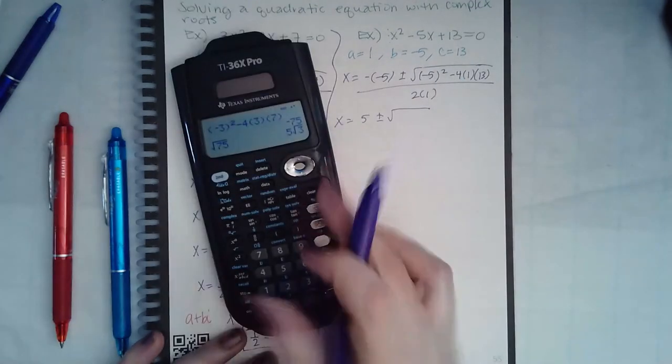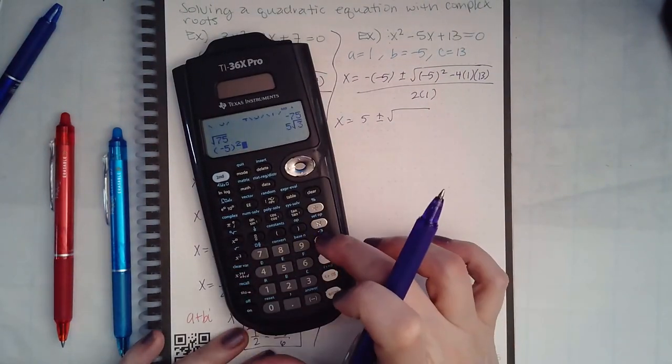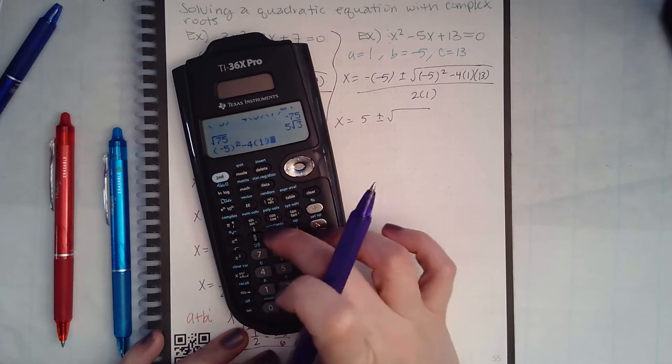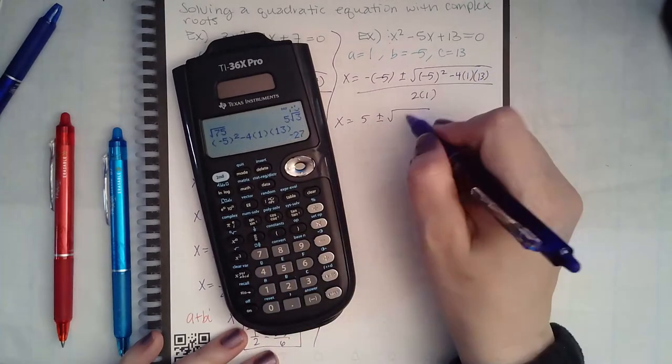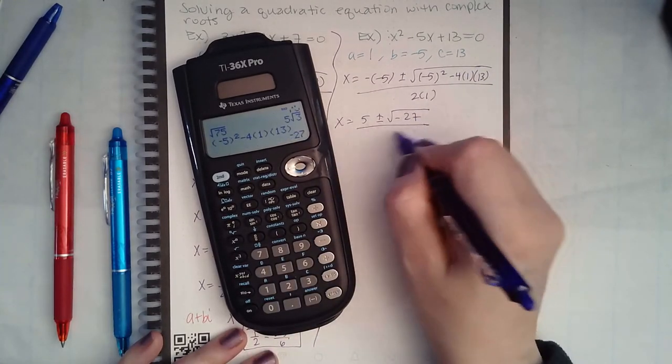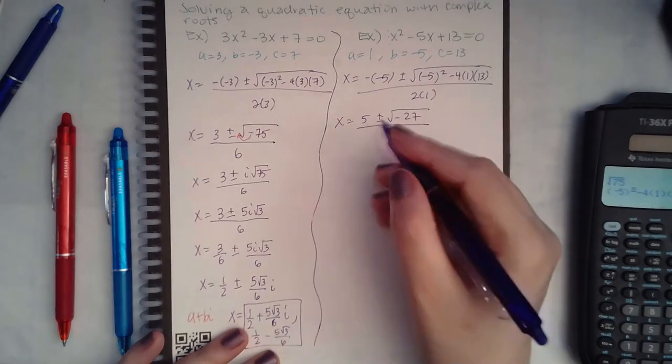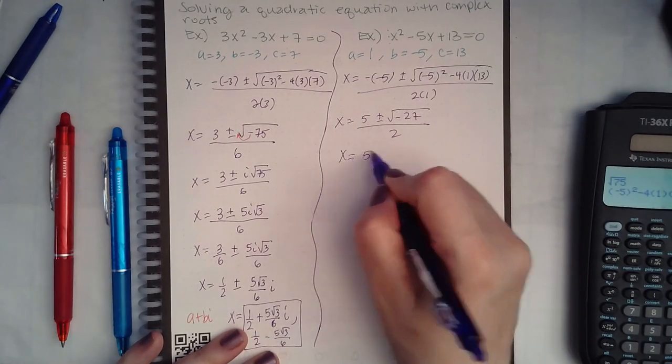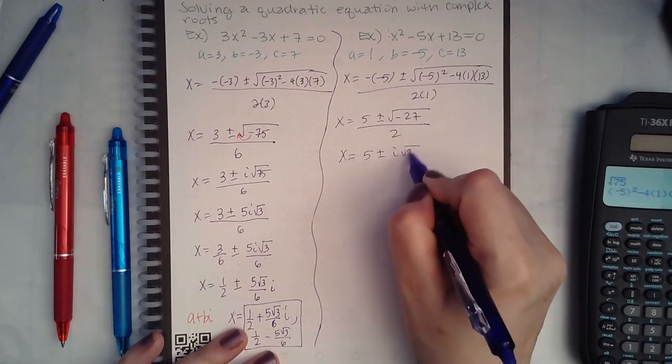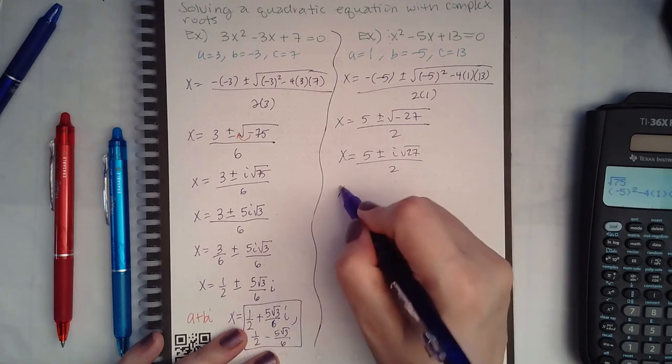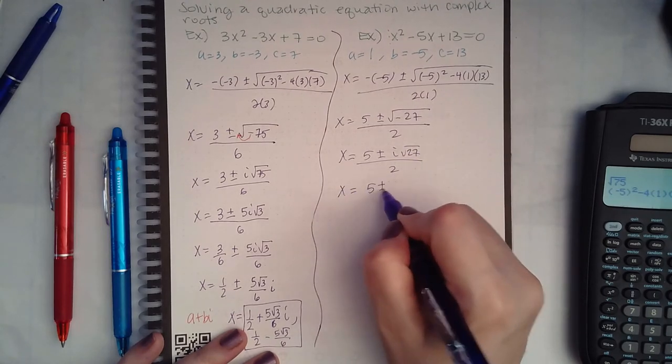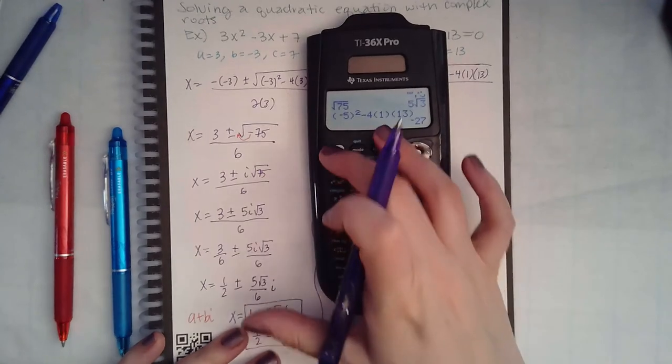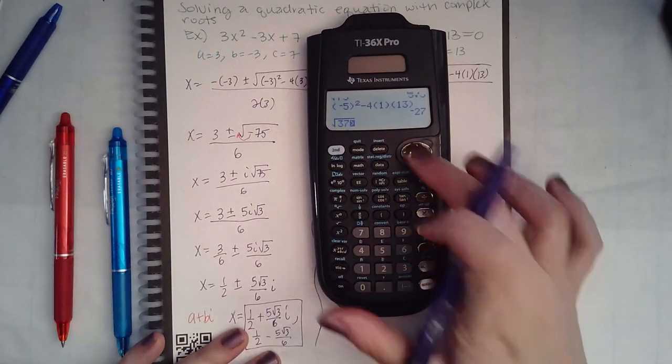We get negative 27. Remember the negative comes out as an i, and square root of 27 does simplify, I believe it is 3 square root of 3.